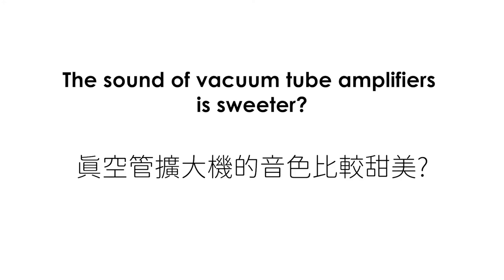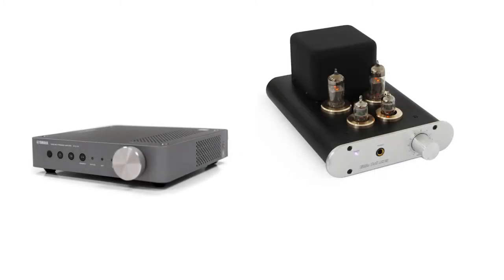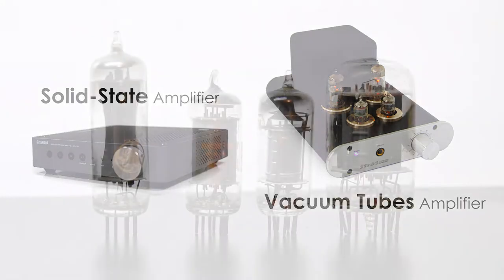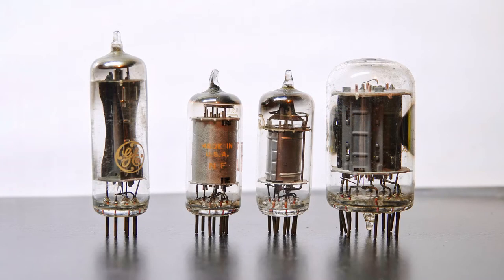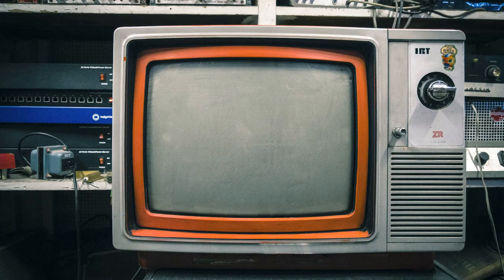The amplifier is a device that amplifies the signal. According to the different amplification components, there are transistors and vacuum tube amplifiers. A vacuum tube is a component that controls the flow of electrons in a circuit. Before transistors were popular, most electronic devices used vacuum tubes.